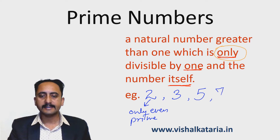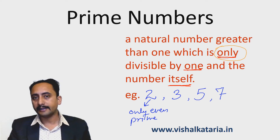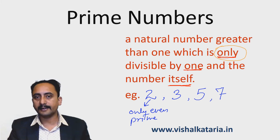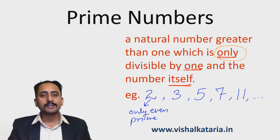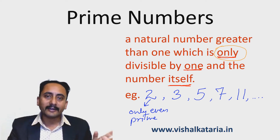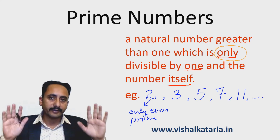Next one is 7, again a prime number. 8 is not a prime number — it is divisible by 2 also. 9 is not a prime number; it is divisible by 1, 3, and 9. The next prime is 11 and so on. Students, there are infinite prime numbers — you cannot count prime numbers on your fingers. They are infinite.